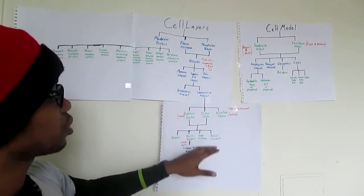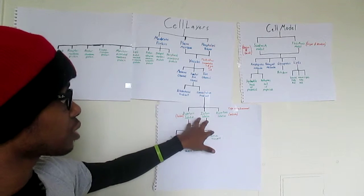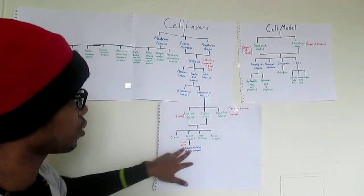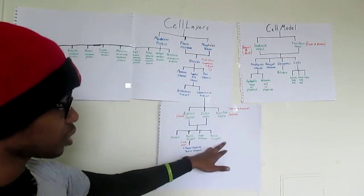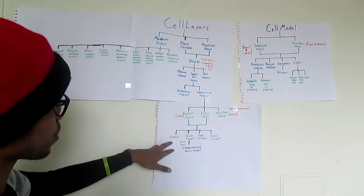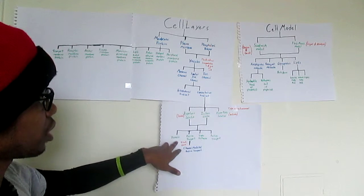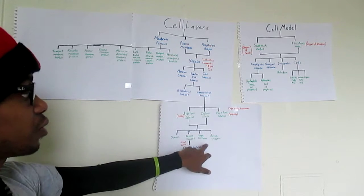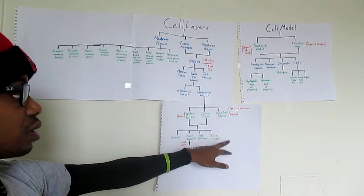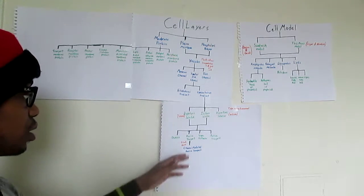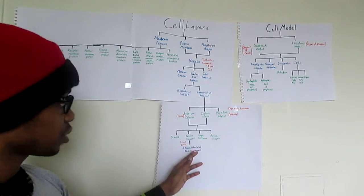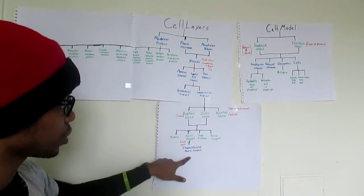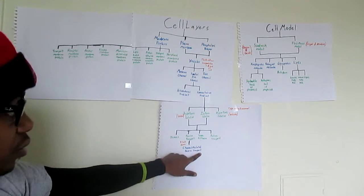Now within the hypotonic solution and the isotonic solution, those two together break down into four types of transport: osmosis, passive transport, simple diffusion, and active transport. The passive transport breaks down into the channel-mediated passive transport.